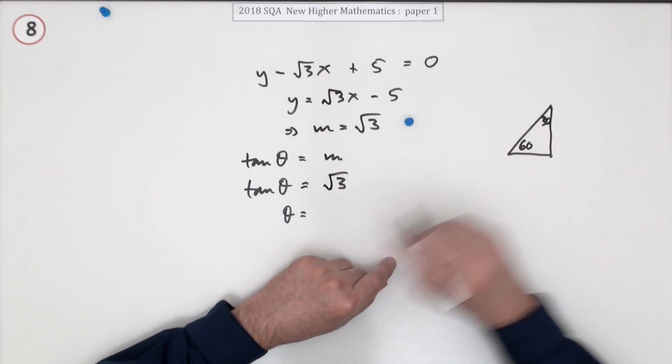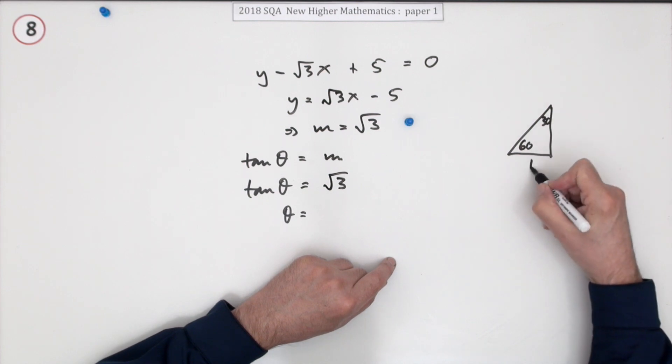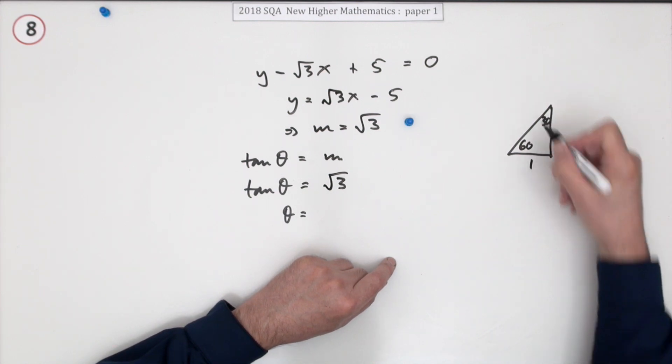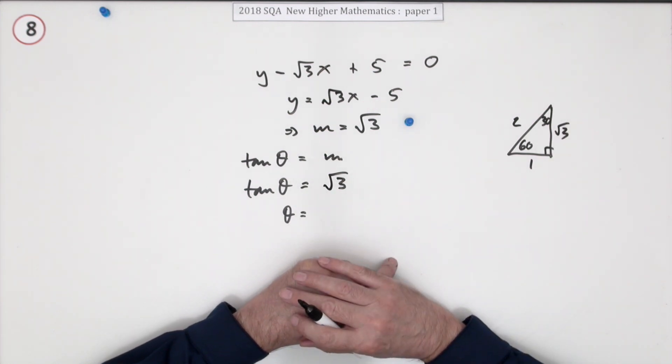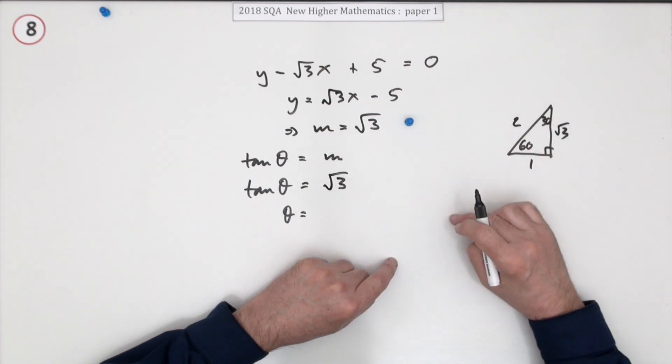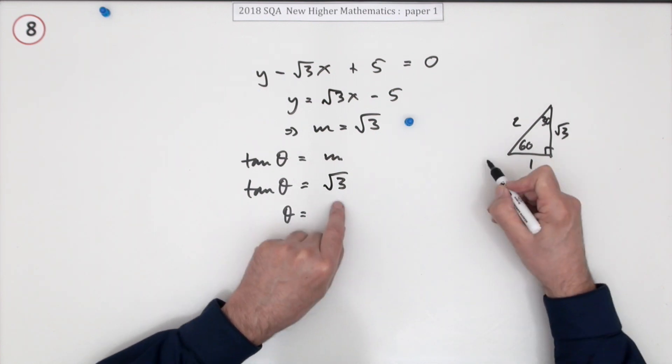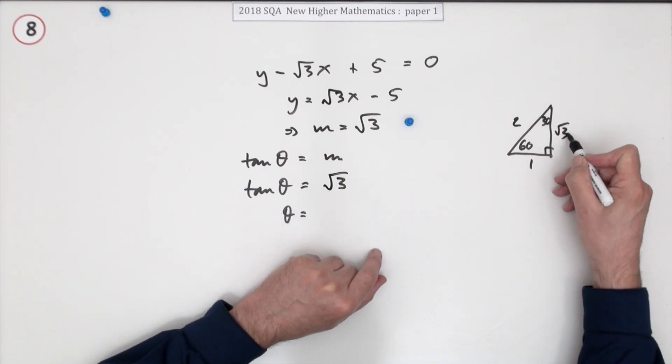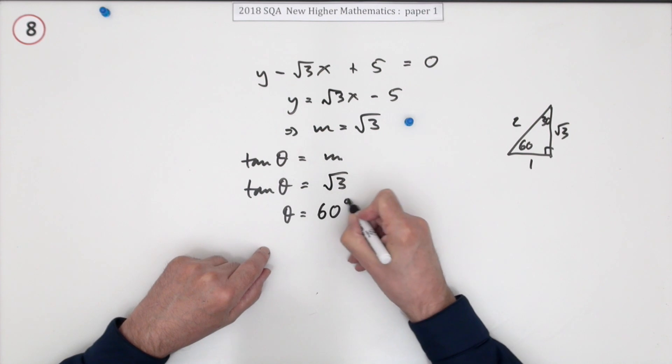That's the 1, 2, root 3: 1 for the shortest side, 2 for the longest, and root 3 for the middle side. So which angle, which of these angles has got root 3 for the tangent? The tangent has to be opposite over adjacent.